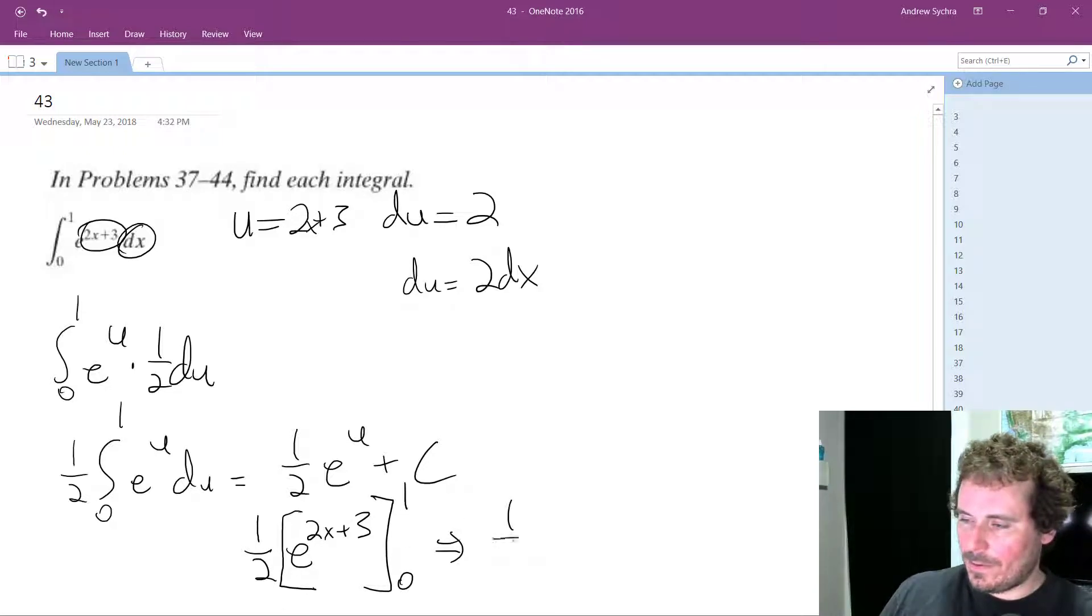And what we end up with is 1 half, and then inside, e raised to the—when x equals 1, we get e raised to the 2 plus 3, which is going to be e raised to the 5. And then minus the 0 component, we get e raised to the 3rd. So we get 1 half of e raised to the 5 minus e to the 3rd.